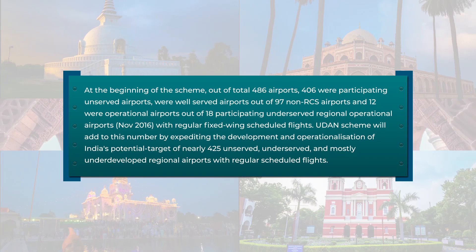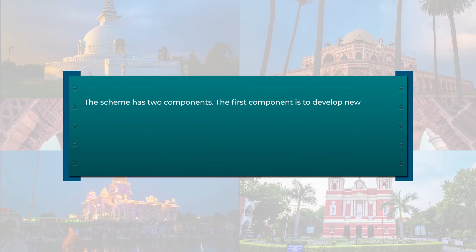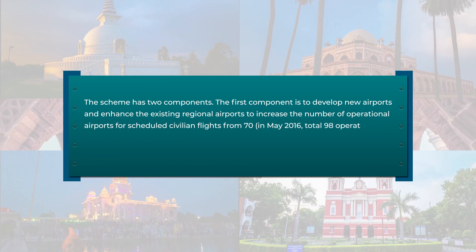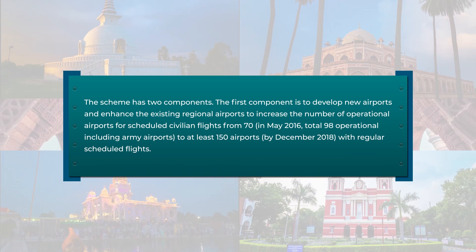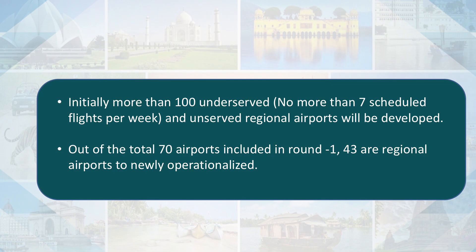UDAN scheme will expedite the development and operationalization of India's potential target of nearly 425 unserved, underserved, and mostly underdeveloped regional airports with regular scheduled flights. The scheme has two components. The first component is to develop new airports and enhance existing regional airports, increasing the number of operational airports for scheduled civilian flights from 70 to at least 150 airports by the end of 2018.